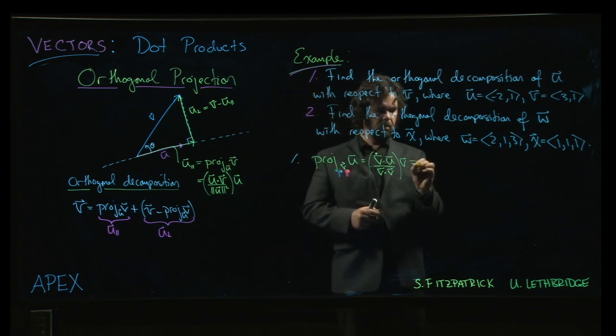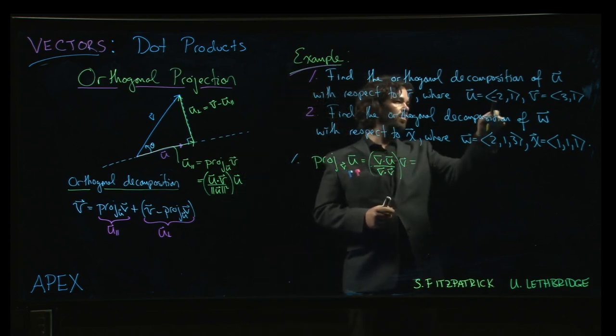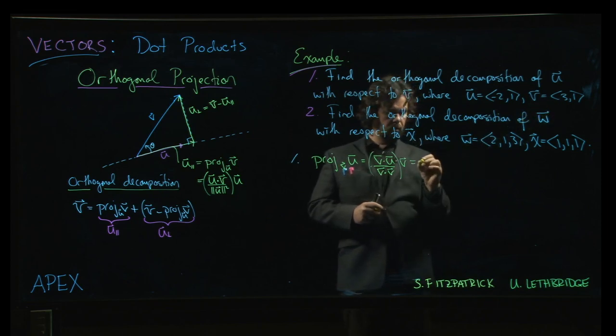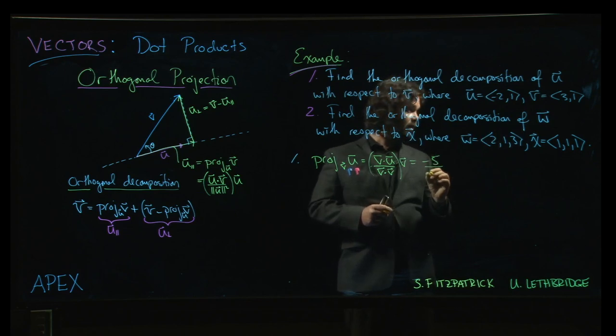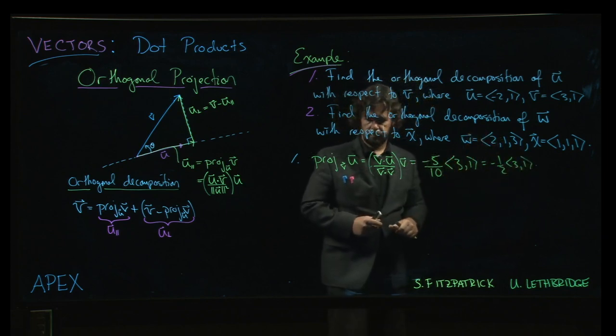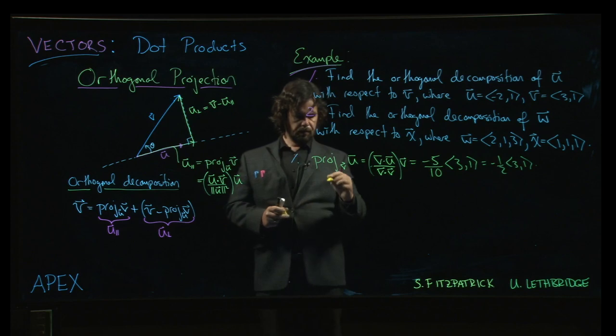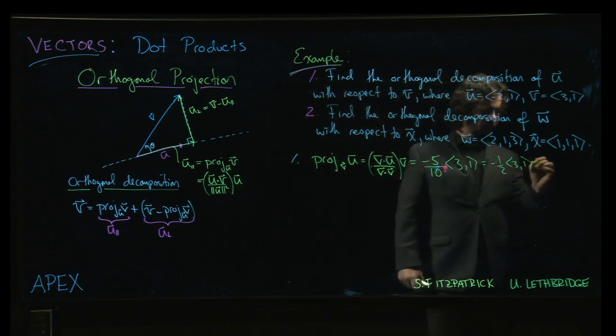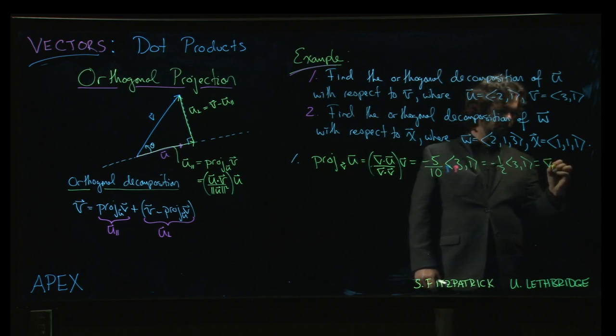So the result should be parallel to v. So v dot u over v dot v times v. So that dot product is minus 6 plus 1, that's minus 5. The magnitude of v squared, which is 9 plus 1, 3 squared plus 1 is 10 times v, which is (3, 1). So we get minus 1 half times the vector (3, 1). All right, so this is the part that is parallel to v.